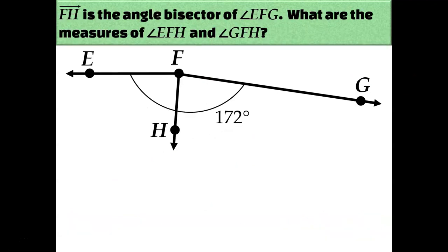Okay, so let's use some angle bisectors to calculate missing angle measures. For example, if I know that ray FH is the angle bisector of EFG, I could use that information to figure out the measures of each of the angles created by the angle bisector.